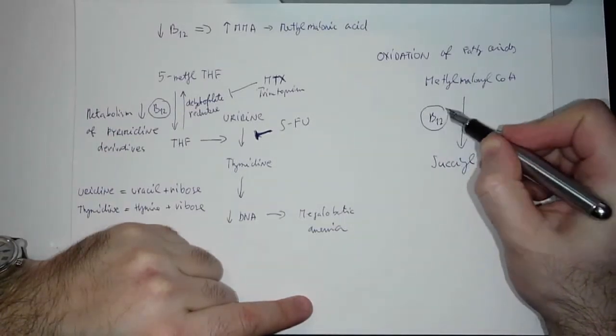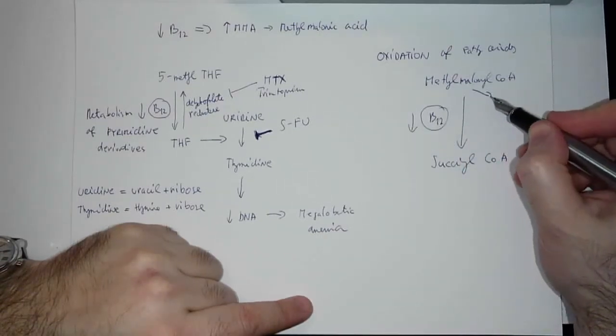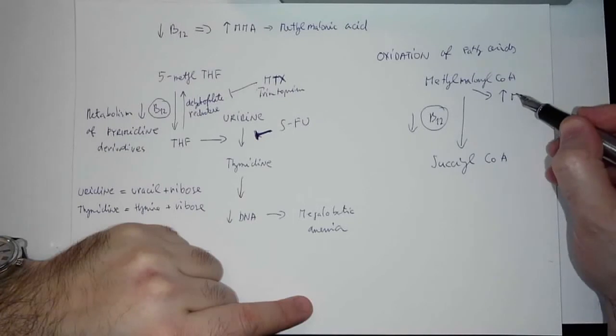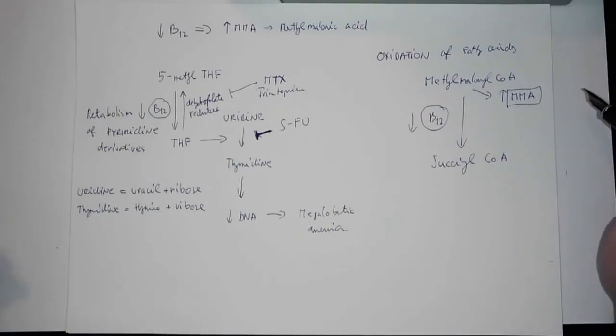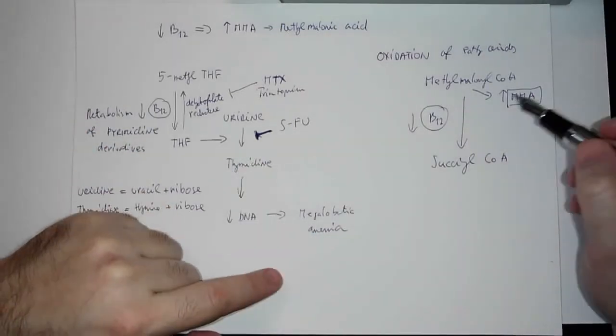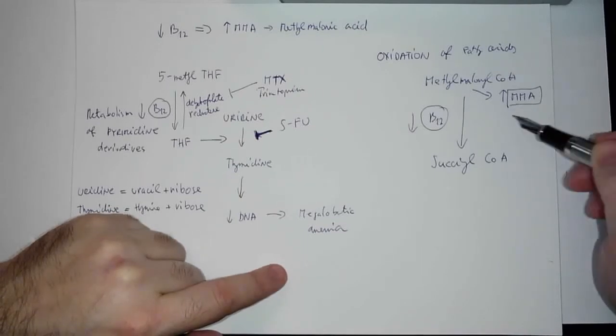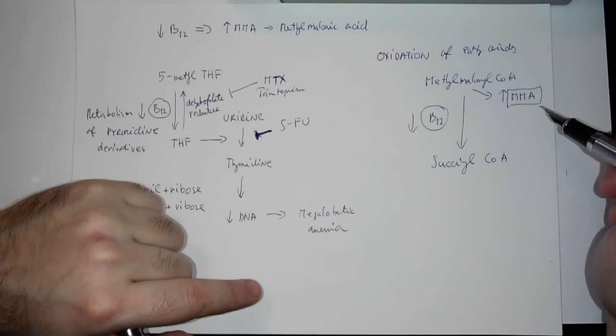Methylmalonyl coenzyme A into succinyl coenzyme A—you need B12 again. In case you don't have enough B12, you're going to have increased levels of methylmalonic acid. So in case B12 is decreased, I'm having megaloblastic anemia and not only this, I'm having also increased MMA levels in blood.